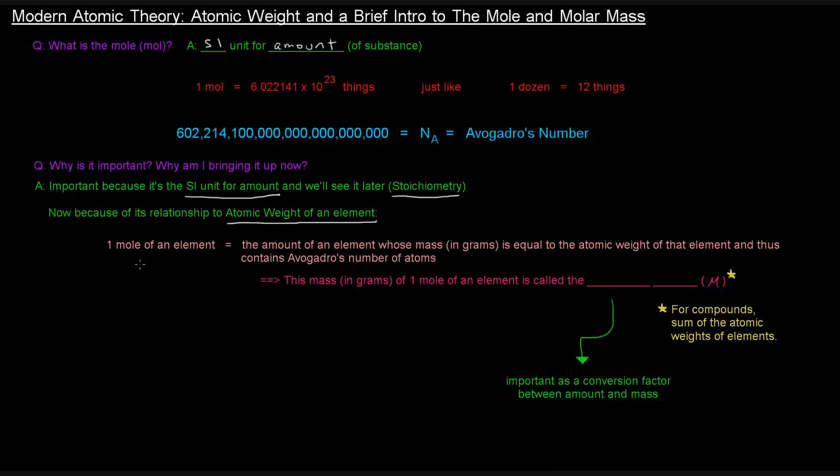So, one mole of an element can be defined as the amount of an element whose mass in grams is equal to the atomic weight of that element, and thus contains Avogadro's number of atoms. This is super important.